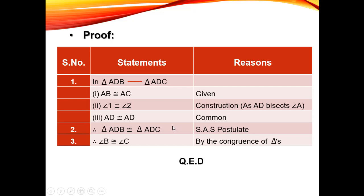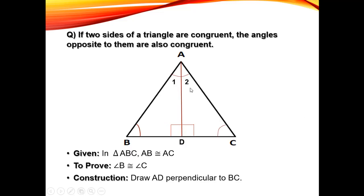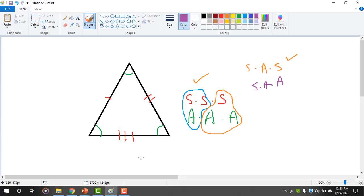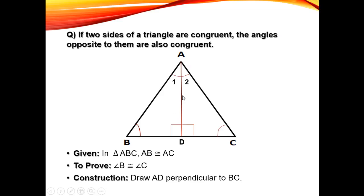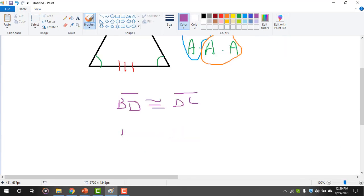Looking at the three things proved: AB ≅ AC (one similarity), angle 1 ≅ angle 2 (congruent), and AD ≅ AD (common side). Triangles ADB and ADC also have congruent right angles — both angle ADB and angle ADC are 90 degrees.